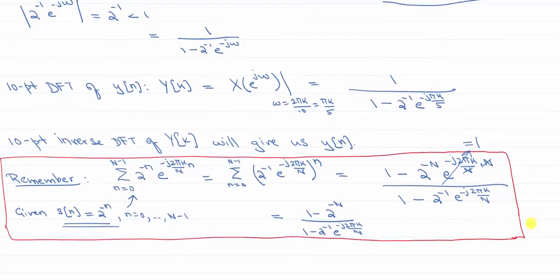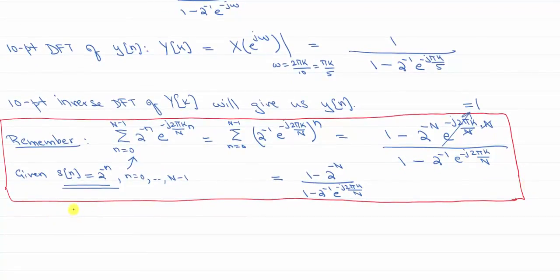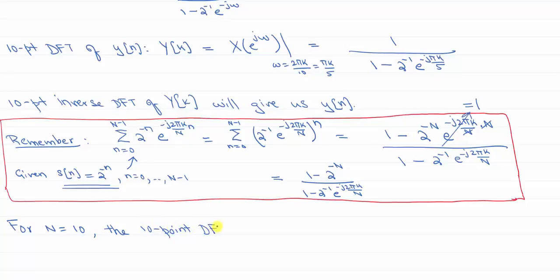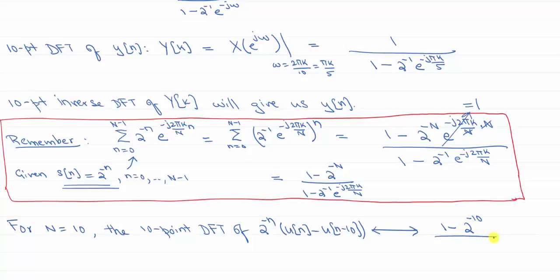Plugging in N equals 10, the 10-point DFT of 2 to the minus N times (U(N) minus U(N minus 10)) — which is a 10-point sequence — equals 1 minus 2 to the minus 10, all over 1 minus 2 to the minus 1 times e to the minus j pi K over 5. So I just plugged N equals 10 into the general expression and obtained this result.